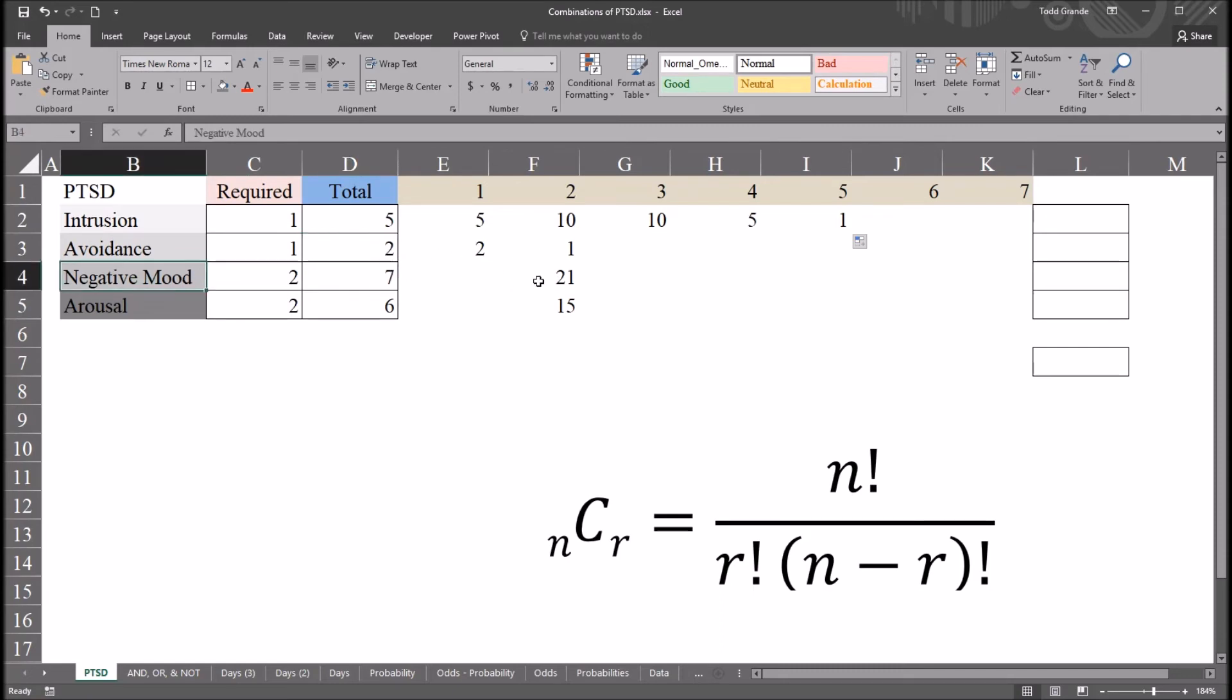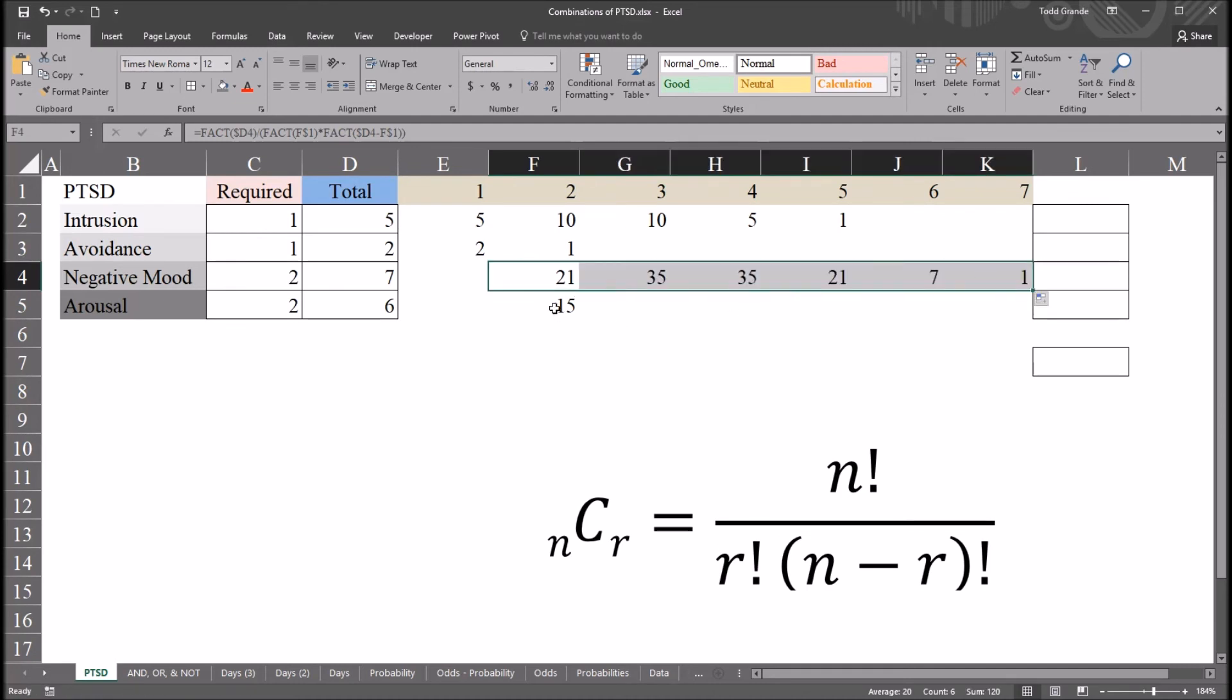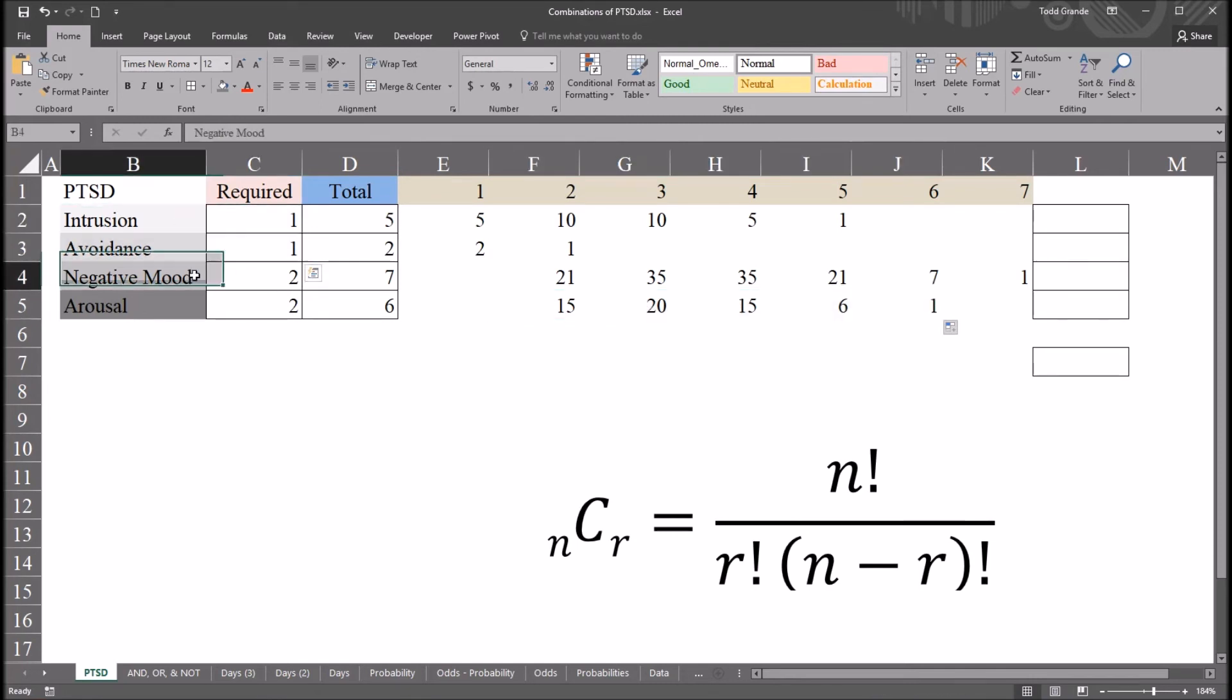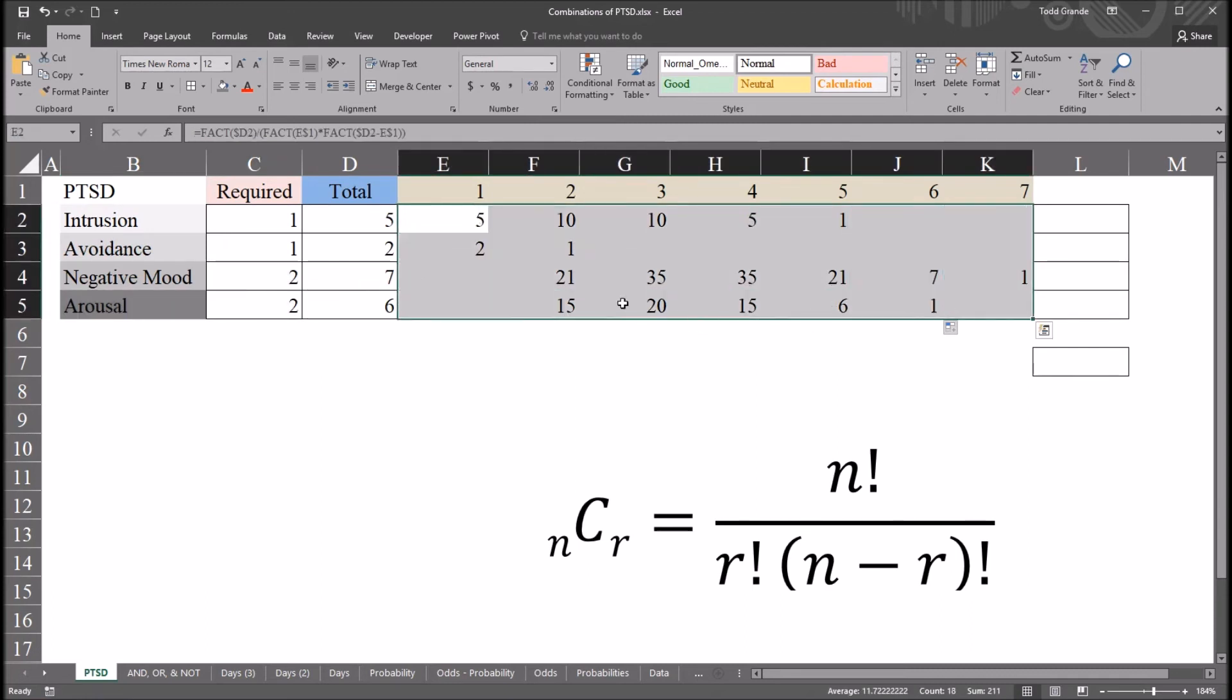Now for negative mood, of course, I'm starting at two, and I can have two, three, four, five, six, and seven. So I can auto fill all the way out to seven. And then similar for arousal except out to six. But there's two symptom criteria at a minimum. So intrusion avoidance, one or more, negative mood arousal, two or more. So that's why we get this table looking the way I have it here.